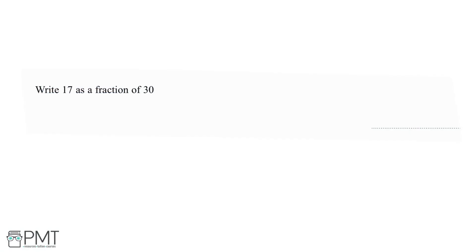Write 17 as a fraction of 30. When we're writing something as a fraction of something else, we write it like this. The answer is going to be 17 over 30. So 17 is being written as a fraction of 30, and we're putting 30 here on the denominator.